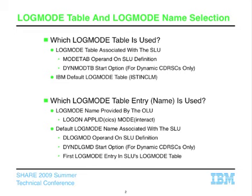If we can't find the DLOGMODE associated with the secondary LU, then the first log mode entry inside the SLU's log mode table is used. So if we look up the SLU's resource definition and it does not have DLOGMODE coded, and it wasn't a dynamic CDRC, then we'll look up the SLU's log mode table and use the very first log mode entry. If the SLU doesn't even have a log mode table associated with it, we'll use the first entry inside the default log mode table IST-INCLM.